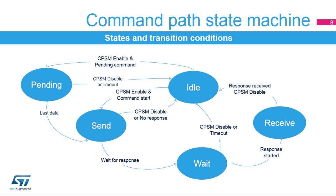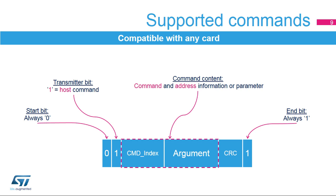The CPSM returns to idle state after a timeout if a response start is not detected. The CPSM can be configured to send a command synchronized with the end of data transfer. When this feature is enabled, the CPSM moves to pending state and waits for the end of the MMC stream transfer. When the last data signal is triggered by the data path, the CPSM moves to send state. The SDMMC controller offers high flexibility for configuring command indexes and arguments, with a flexible 32-bit register for arguments and an independent 6-bit field for the command index. The StartBit, TransmitterBit, CRC, and EndBit fields are automatically generated and sent on the bus.